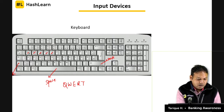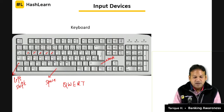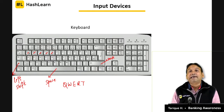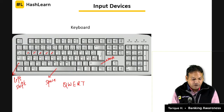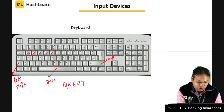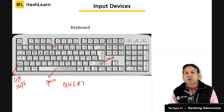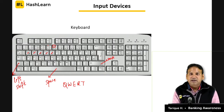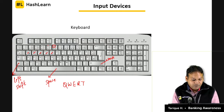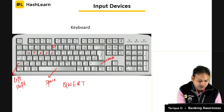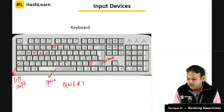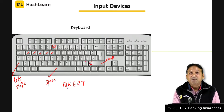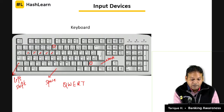The shift key is used for typing capital letters and special characters. For example, if you want to type the dollar symbol above number 6, you need the shift key. In the old keyboard design, shift was represented by an upward arrow; today it is simply written as 'shift'.